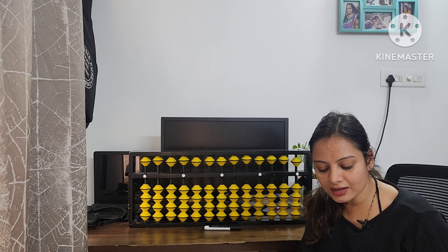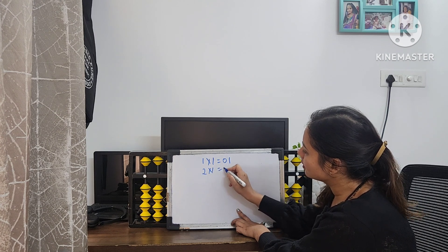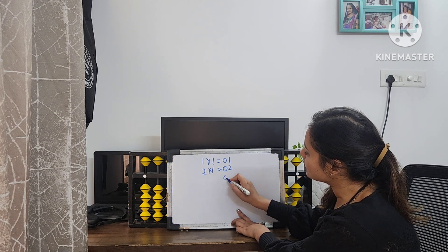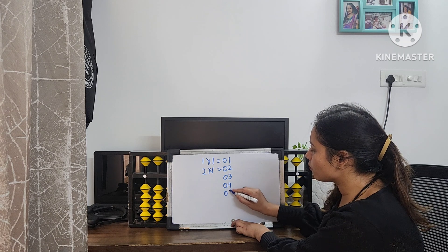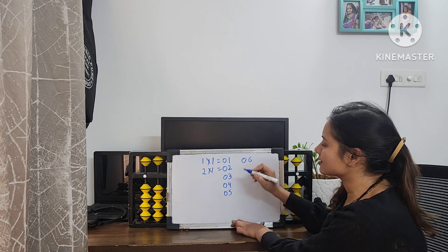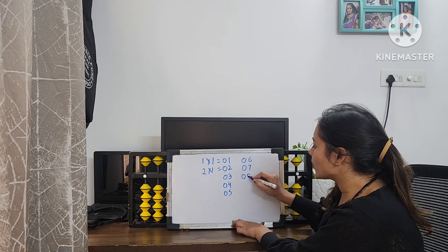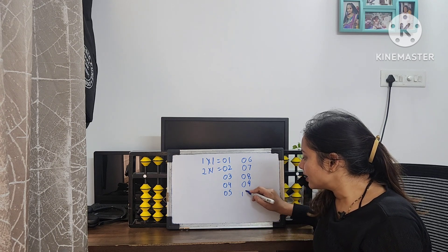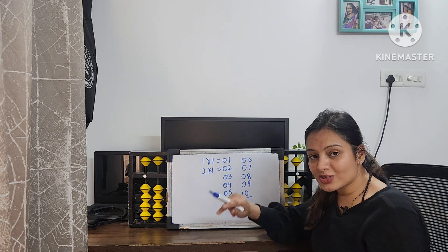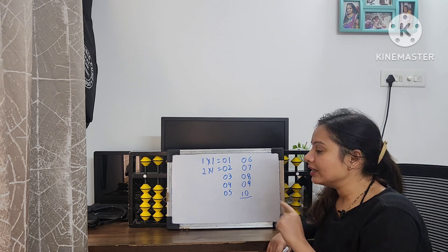For example: 1 one is 01, 2 ones are 02, 3 ones are 03, 4 ones are 04, 5 ones are 05, 6 ones are 06, 7 ones are 07, 8 ones are 08, and 9 ones are 09. But 10 ones are 10, which is already in 2 digits. So we always have to keep results in 2 digits — nothing should stay in single digits.